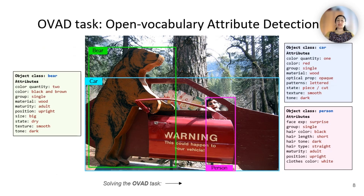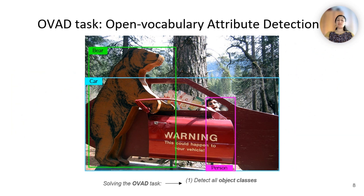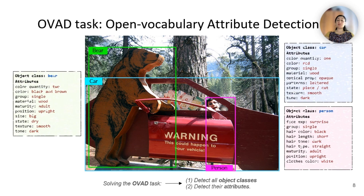We introduced the OVAD task to evaluate the ability of visual language models in recognizing object attributes. The objective is to detect and recognize an open set of objects in an image, together with an open set of attributes for every object. The OVAD task consists of two stages. The first stage, Open Vocabulary Detection, aims to detect all objects in the image, including novel objects with no bounding box or class annotation during training. The second stage focuses on identifying the attributes associated with each detected object, with none of the attributes annotated during training, making them all novel.